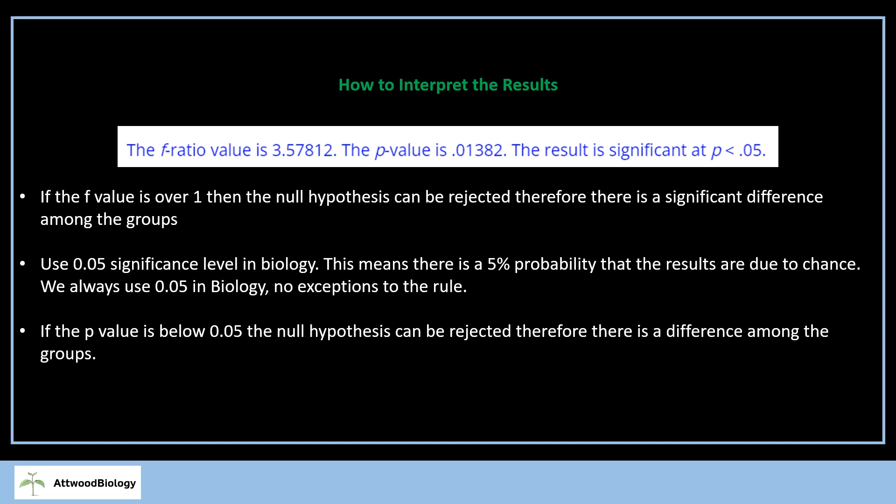Again, 0.05 significance level. The reason we've used that is because there's a 5% probability that the results are due to chance. This needs to be in your assignment. If the P value is below 0.05, the null hypothesis can be rejected. Therefore, there is a difference among the groups. You'll see whenever you put your results in that the interpretation of the F and P value should marry up.